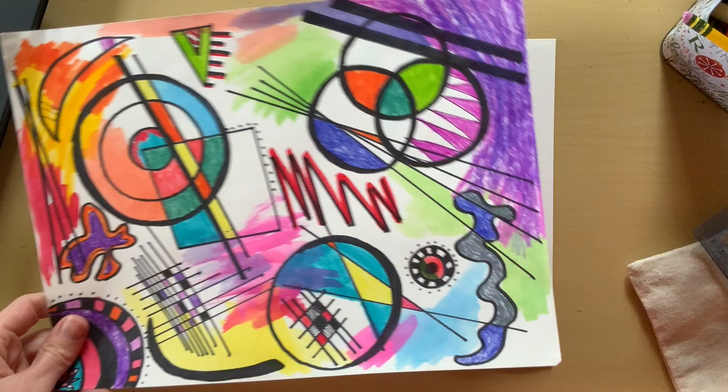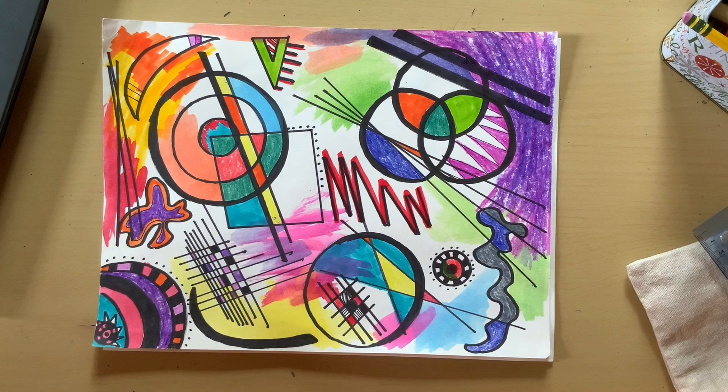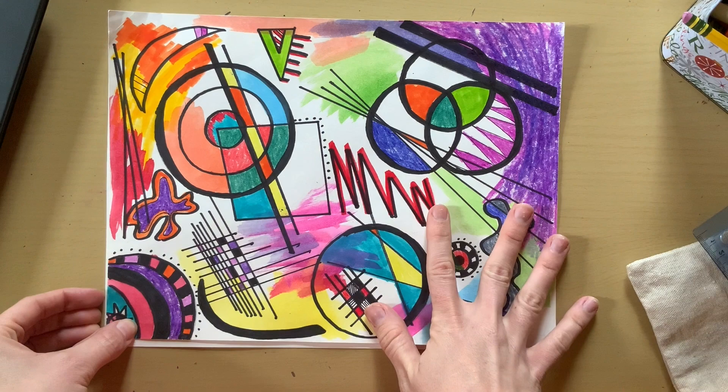Today we're going to be doing an abstract artwork based on artist Vasily Kandinsky. So first we're going to draw circles, lines, and shapes and then we will add color to it.